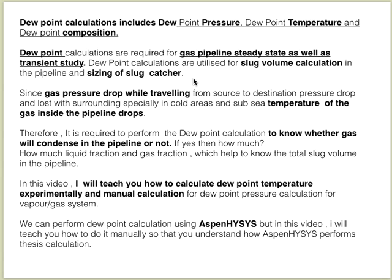If we know the dew point, we will know what the slug volume will be. Slug is liquid volume collected in a gas pipeline in the form of batches and elongated band formations. When the gas is moving and we receive the gas onshore, we need to size the slug catcher. The slug volume will fix the capacity of the slug catcher, so dew point calculation is very important for gas pipeline study.